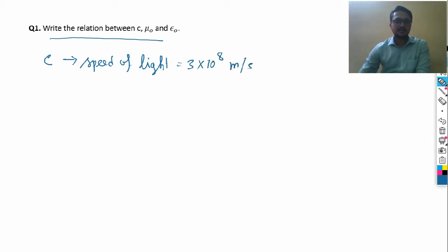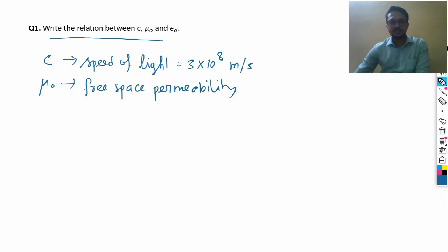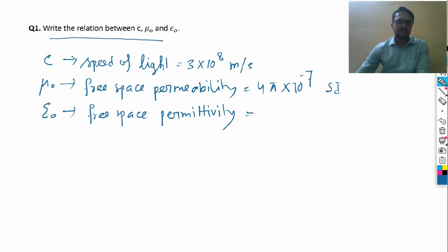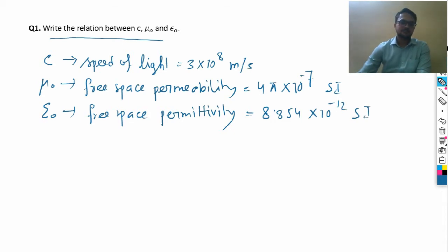The value of C in SI units is 3 × 10⁸ meter per second. μ₀ is the free space permeability, with value 4π × 10⁻⁷ in SI units. ε₀ is the free space permittivity — it appears in the electric field formula — with value 8.854 × 10⁻¹² in SI units.